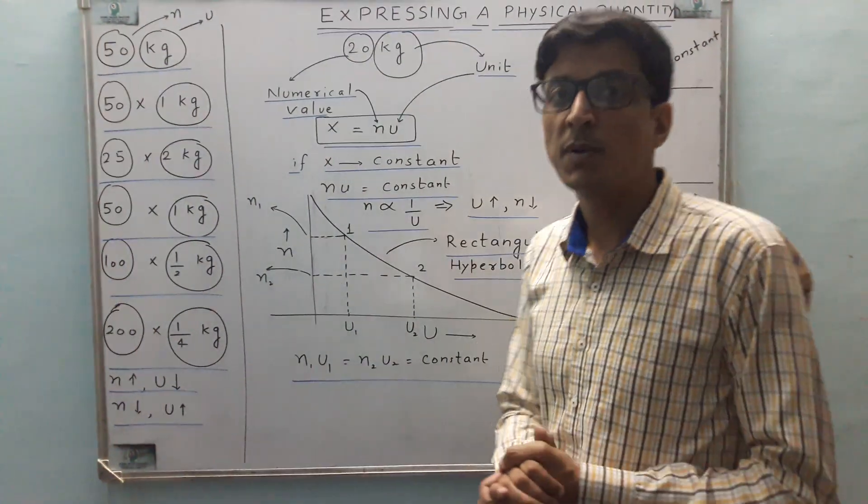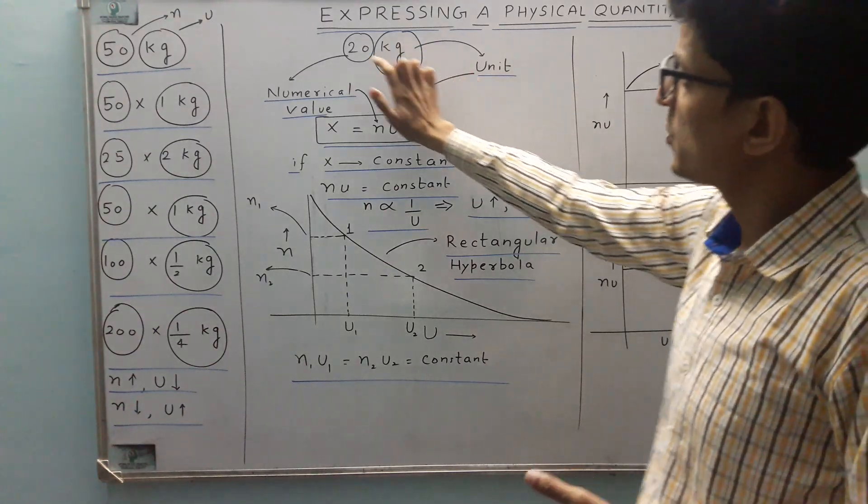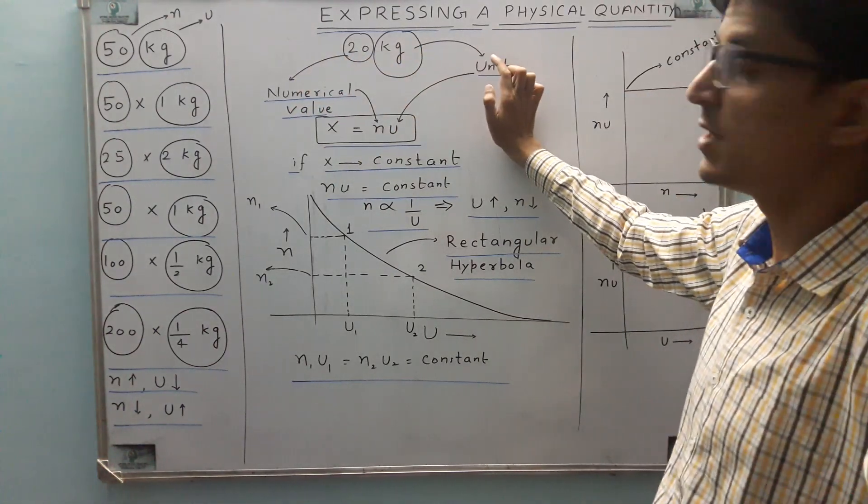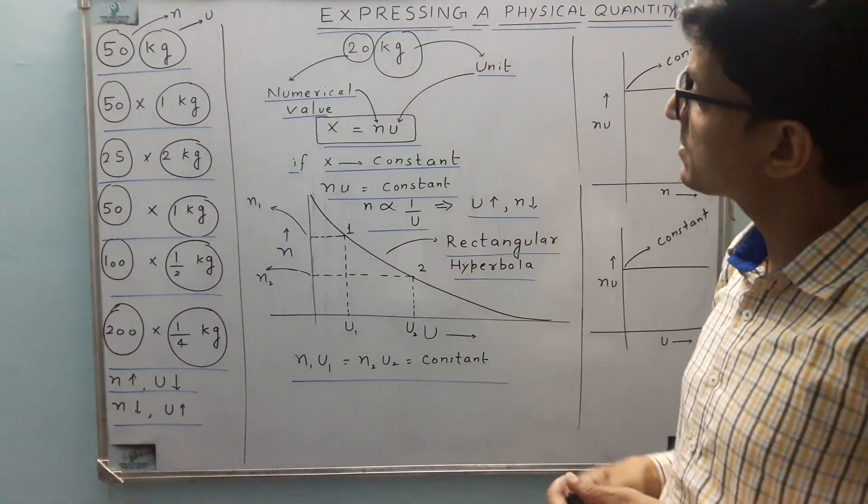Let's look into the things with proper perspectives. So suppose I write 20 kg. Here this is the numerical value and this is the unit. So if I write a physical quantity x, then x can be written as n multiplied by u, where n is the numerical value and u is the unit.